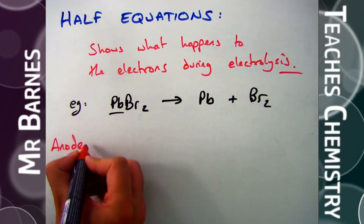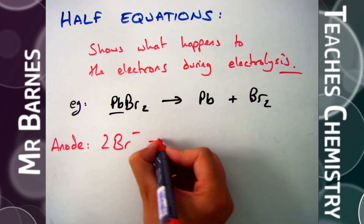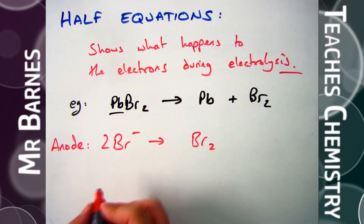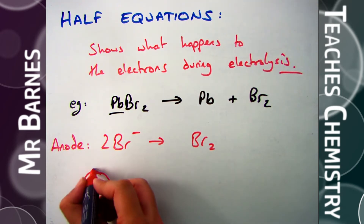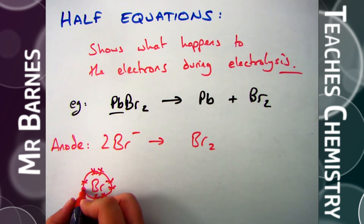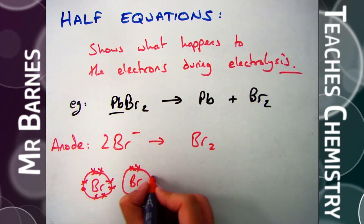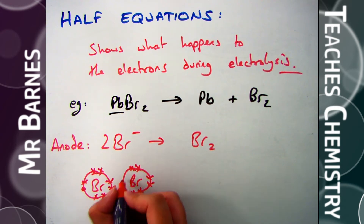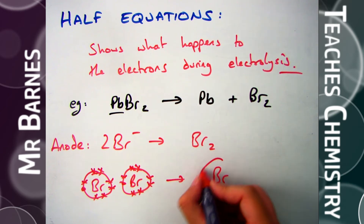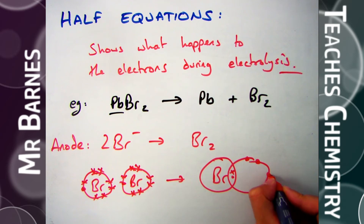Moving on to the anode: I take my bromide ions, which is Br⁻, and want to turn them back into bromine. All halogens are diatomic so they go around in pairs, therefore I need two Br⁻ ions. Starting with Br⁻ ions and going back to Br₂. For Br⁻ to have a full outer shell it has seven electrons and has gained one to get eight, and I've got two of them — two with full outer shells.